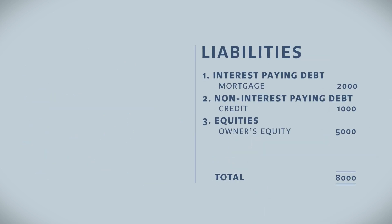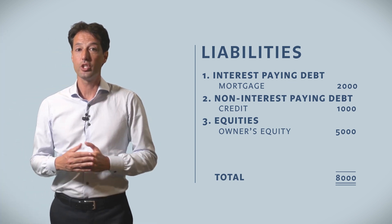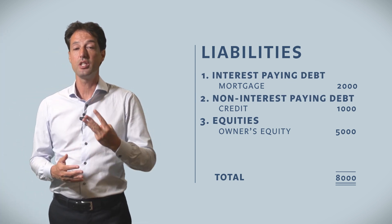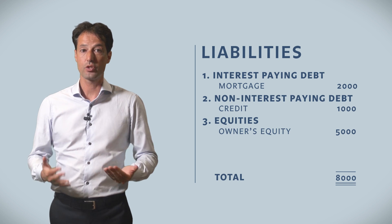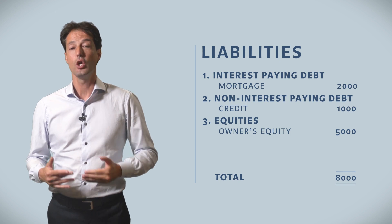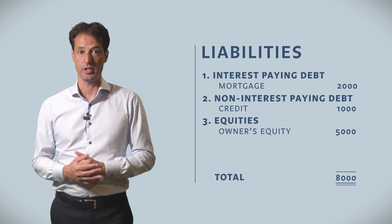The right hand side of the balance sheet represents the liabilities. In our case we distinguish three types of liabilities: interest paying debt, non-interest paying debt, and equity.